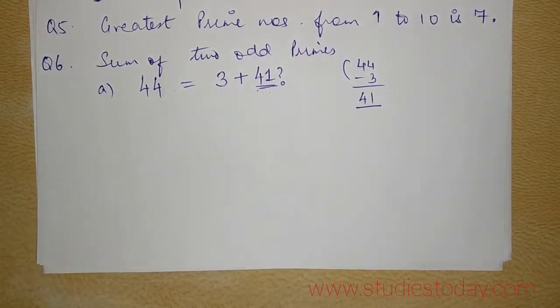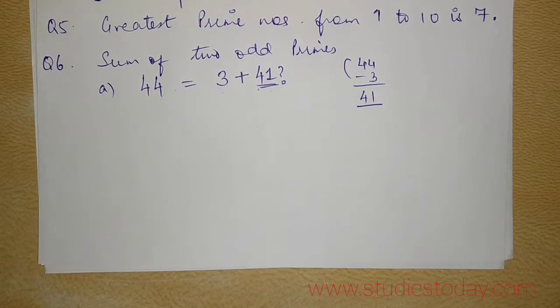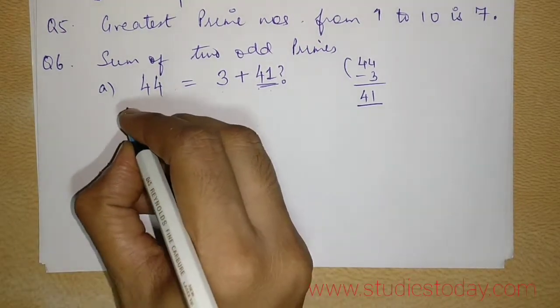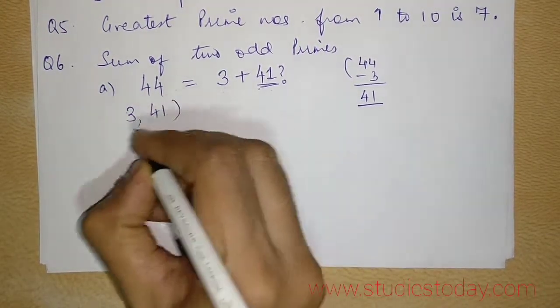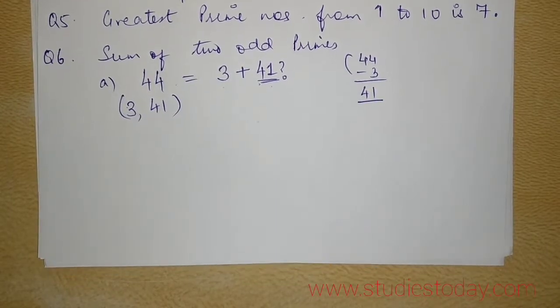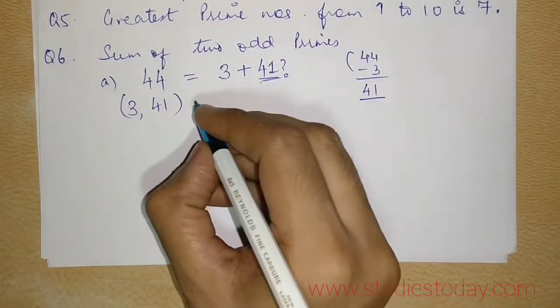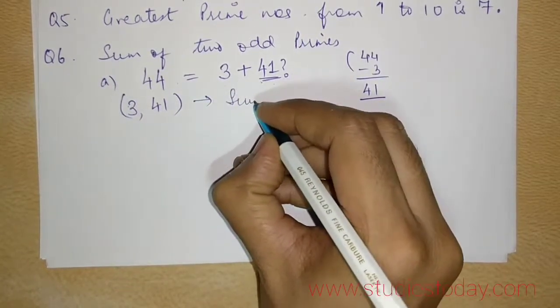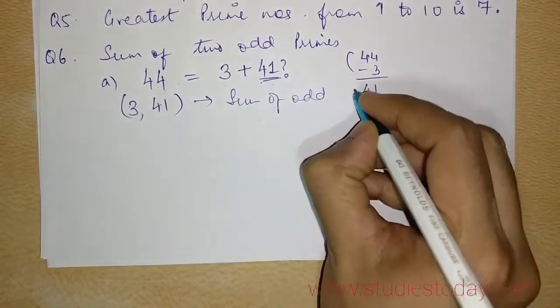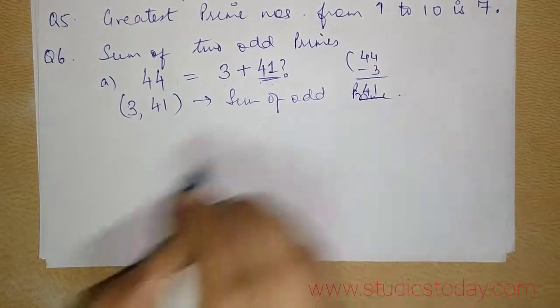Now, if I remember my sieve of Eratosthenes, then I will come to know that 3, 41 are both odd primes. So I have expressed 44 as a sum of odd prime.